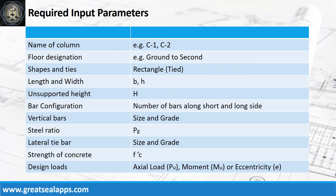Enumerate input parameters required: name of column (e.g., C1, C2), floor designation (e.g., ground to second), shape and ties, length and width of column, unsupported height, bar configuration, vertical bars with size and grade, steel ratio, lateral tie bars with size and grade, strength of concrete, and design loads.